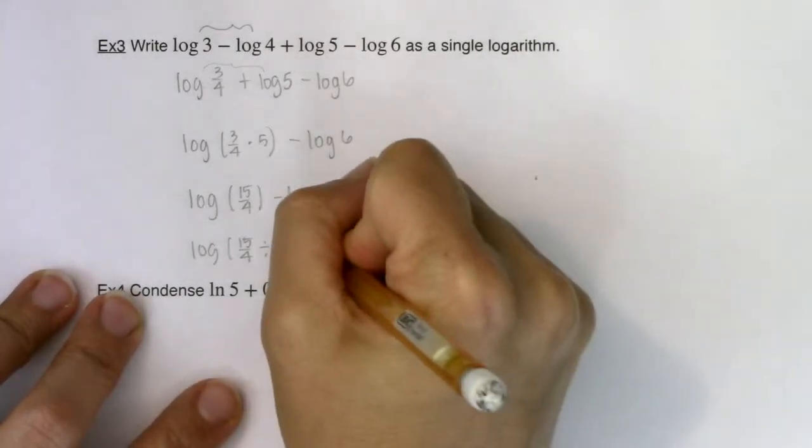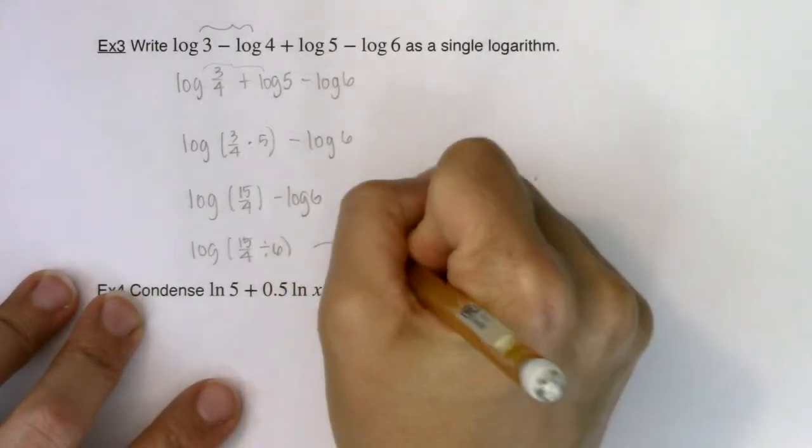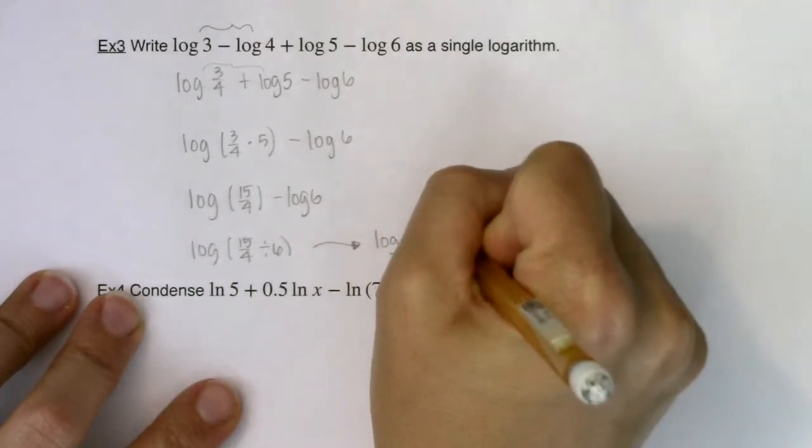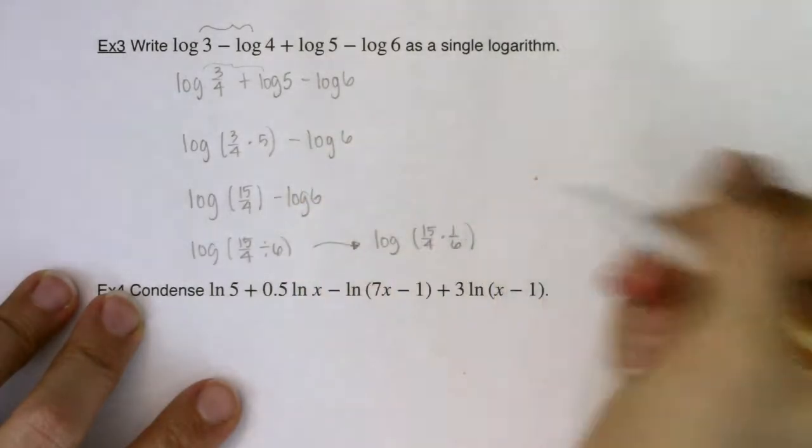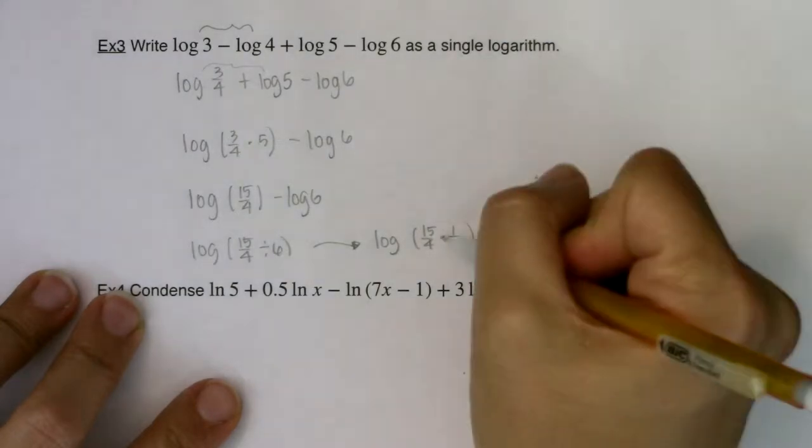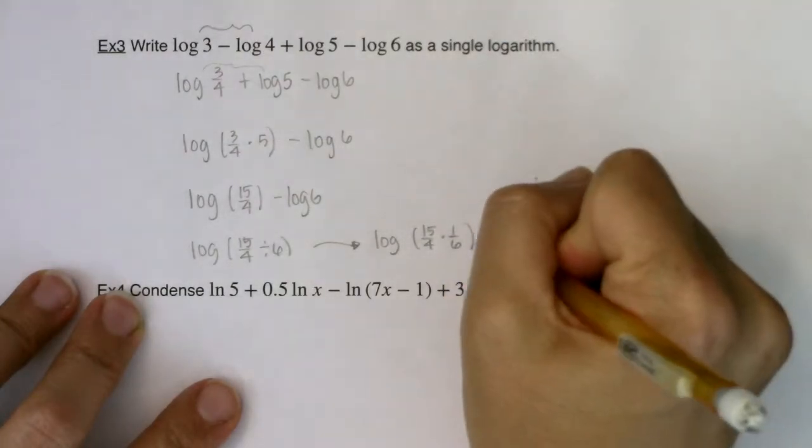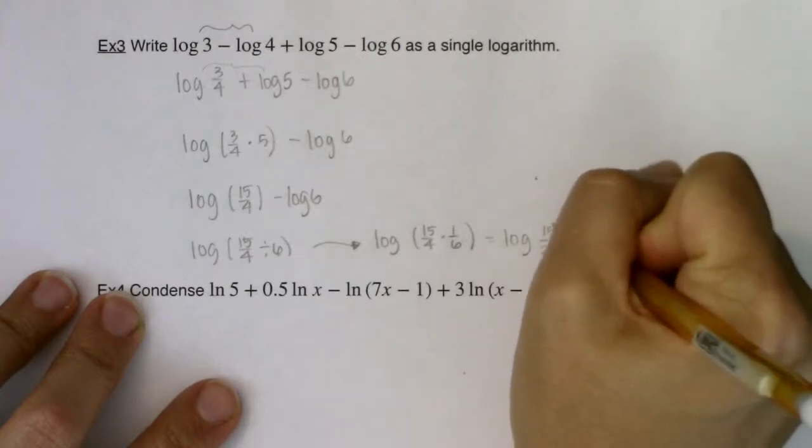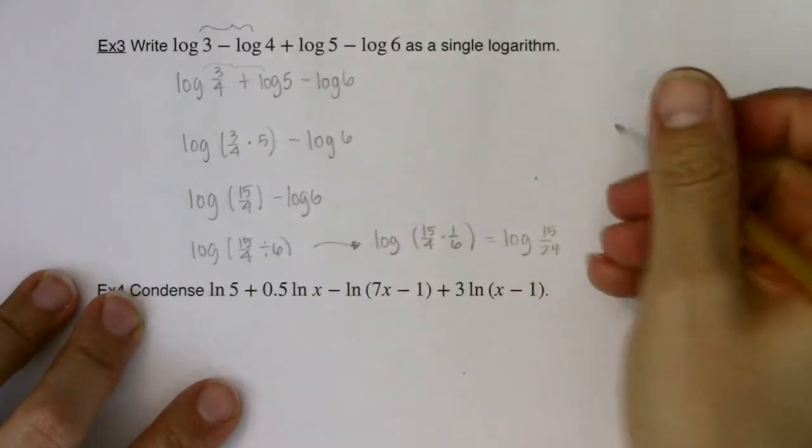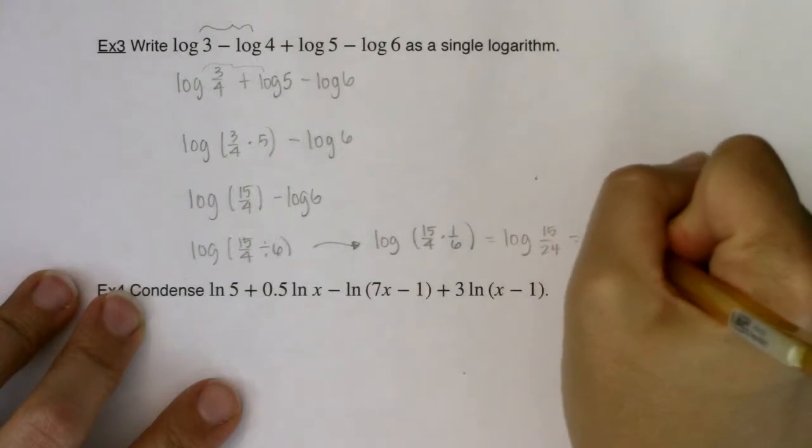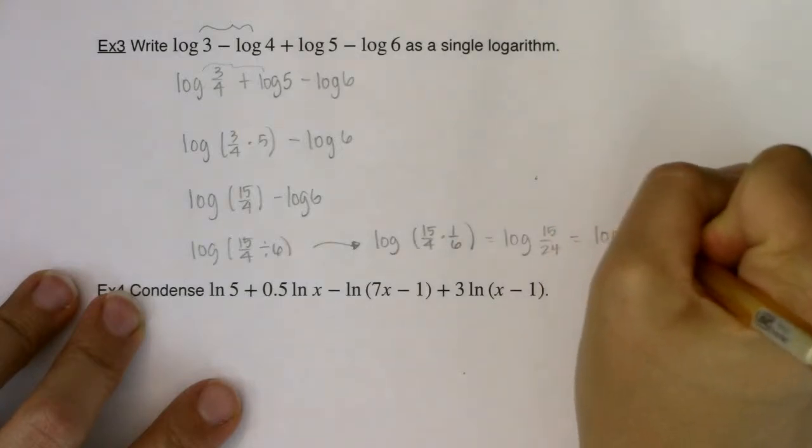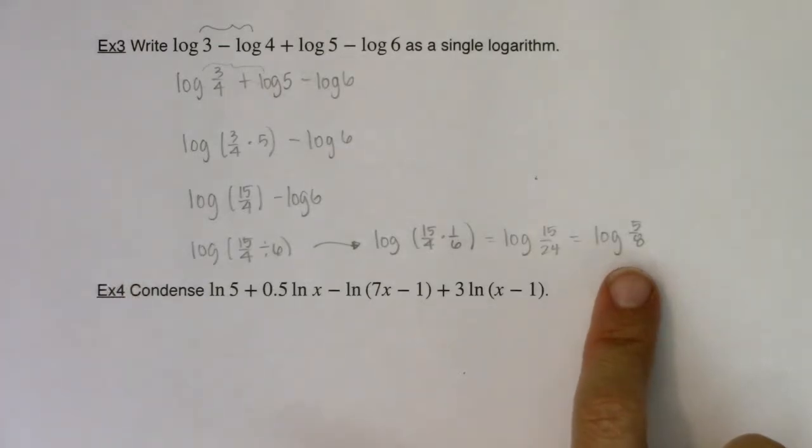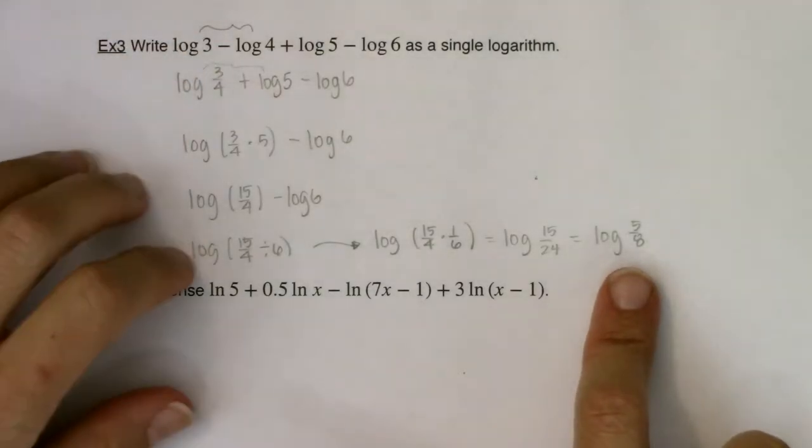And we know what that turns into, right? So I can say this is log of 15 fourths times 1 over 6 because dividing by 6 is like multiplying by its reciprocal. This becomes log of 15 over 24. They have a 3 in common. So I can simplify that to log of 5 eighths. So there's my end answer. And this was me going one step at a time.